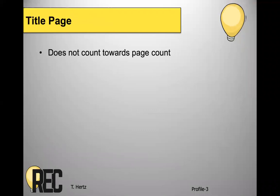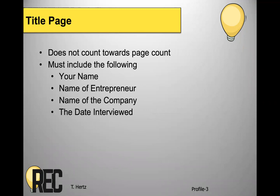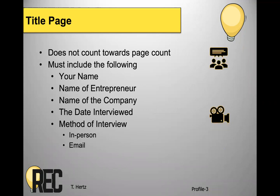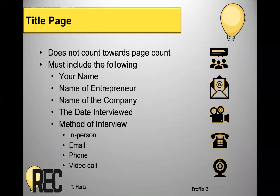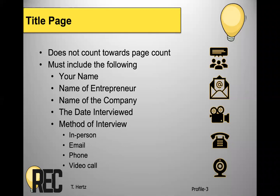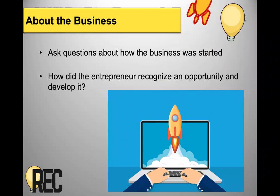On the title page — which again doesn't count towards the page count — it must have your name, the name of the entrepreneur, the name of the company they started, the date you interviewed them, and how you interviewed them. Was it an in-person interview, by email, a phone interview, or a video call such as Skype or Zoom? Any of those are fine — I just need to know which one it was. Then ask them questions about the business: how did they recognize the opportunity, and how did they develop the opportunity?